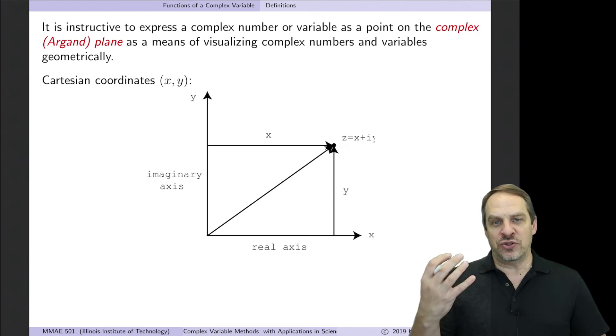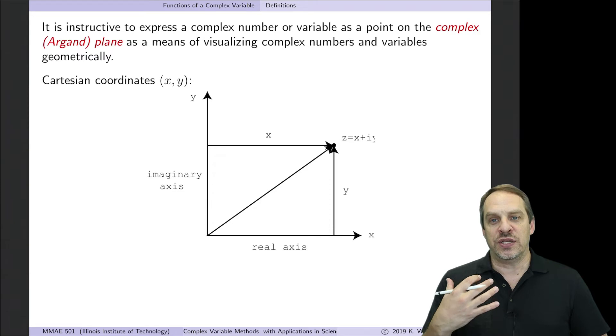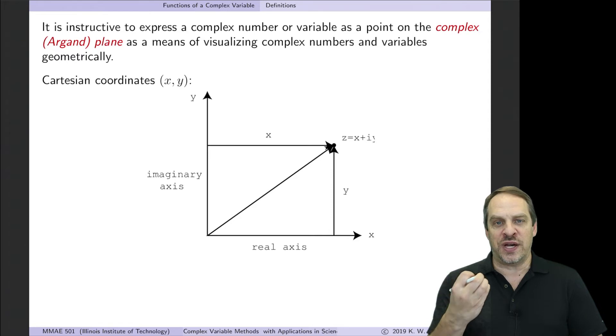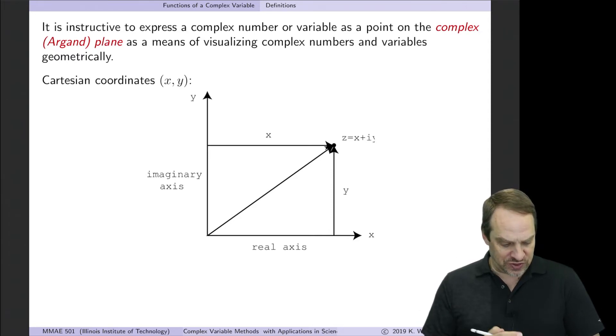Now, a very helpful way to visualize, literally visualize, complex variables, is to use the complex plane. It's sometimes referred to as the Argand plane. It actually should be called the Casper-Wessel plane, which is another story. You should just look that up and see why I say that. But anyway, so we'll call it the complex plane. And it's a way for us to visualize complex numbers and variables in a geometric way that will be very, very helpful for us.